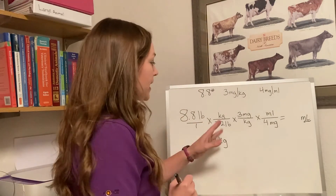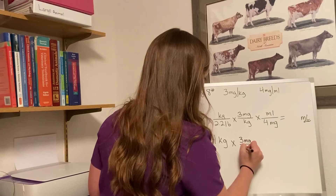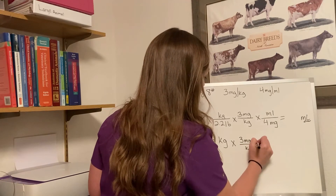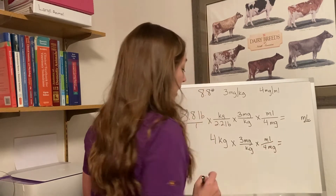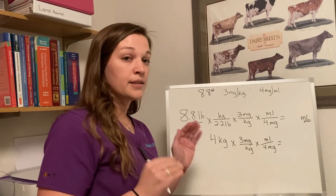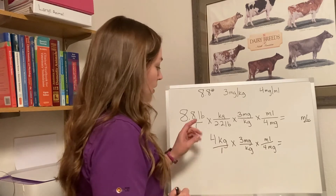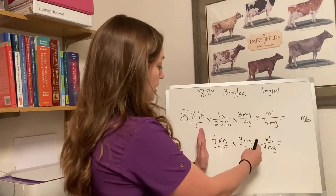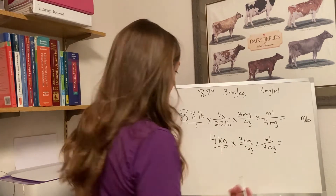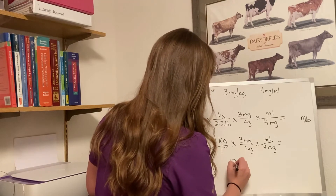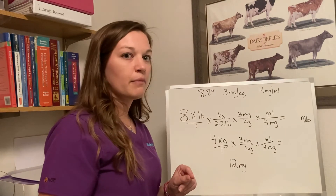Next step: we still need to figure out how many milligrams so that we can figure out how many milliliters. Remembering our basics of how we multiply within fractions — 4 kilograms is now a top number, so in the next part of our equation we have two top numbers, which means they multiply. So now we have 12 milligrams. Now I know I need to give my patient 12 milligrams.